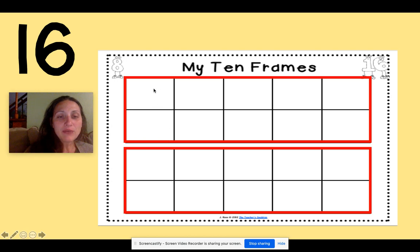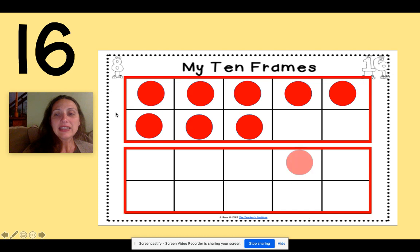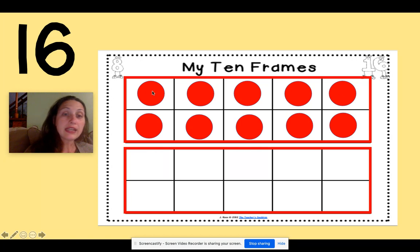I can use these two tens frames to show the number 16. When I put my counters in, I work from left to right. So here we go. Now, 1, 2, 3, 4, 5, 6, 7, 8, 9, 10. And when I get to the number 10, I can also see that my first tens frame is full.